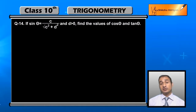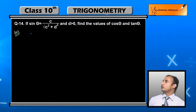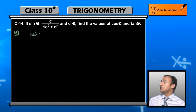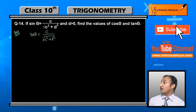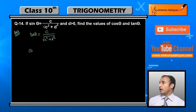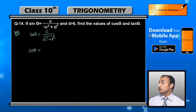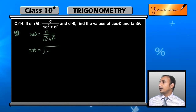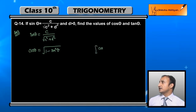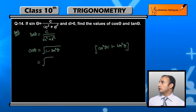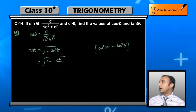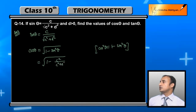So first, sin θ = c / √(c² + d²) is given. Now I need to find cos θ. I can write cos θ = √(1 - sin²θ). This comes from the identity cos²θ = 1 - sin²θ, so taking the square root gives cos θ = √(1 - sin²θ). Now substituting the value of sin θ, squaring c gives c² on top.